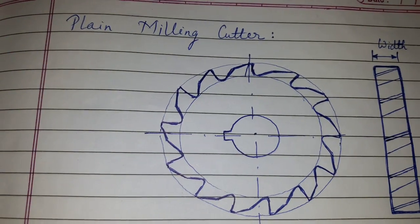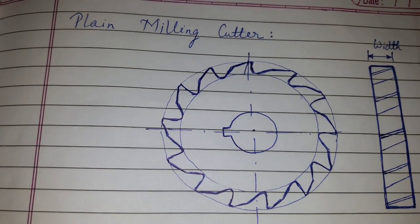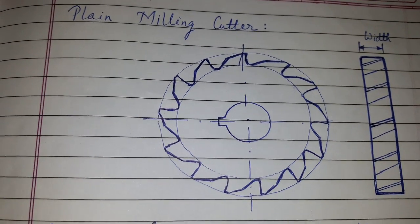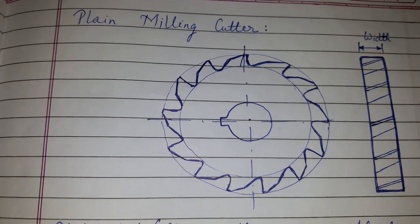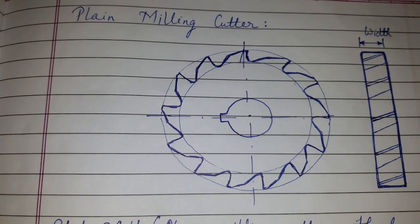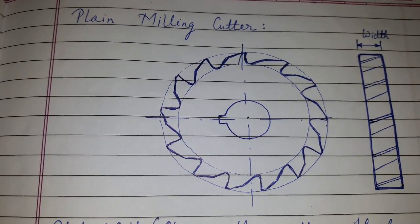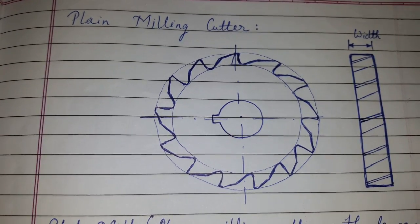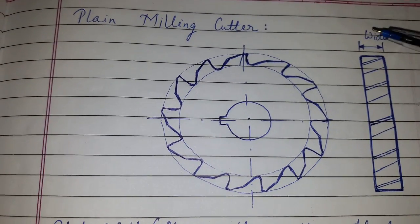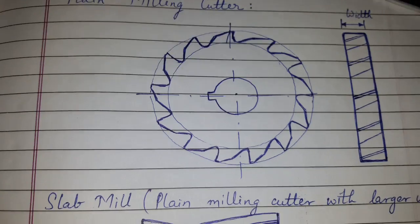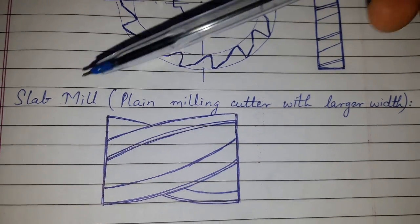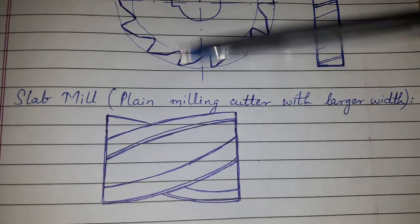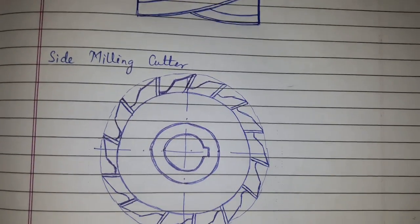Today's topic of discussion is different types of milling cutters. The intention of this video is to show a simple diagram which you can draw in examination. This is a plain milling cutter, and this is the width of the plain milling cutter. If the width is more, then it is called a slab mill — a plain milling cutter with larger width.